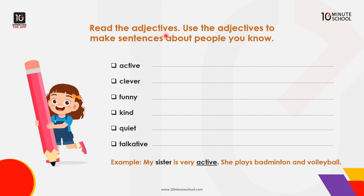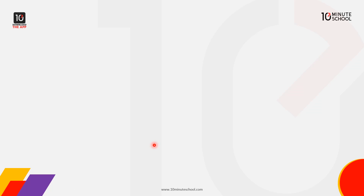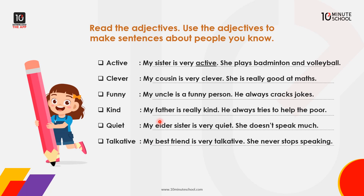Read the adjectives and use them to make sentences about people you know. Let's look at the adjectives: active, clever, funny, kind, quiet, and talkative. Let's make a sentence. Active: My sister is very active — she plays badminton and volleyball.